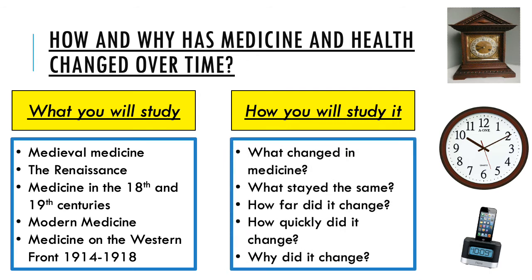In terms of how you will go about studying it, this is largely about what has changed and what has stayed the same in medicine and health across this large period of time. When assessing change we want to ask: why did things change? What brought about these changes? And then we need to look at the speed of change and the extent of change — when did things change quickly or slowly, and when did things change a lot or only a little? Those are the parameters we'll use to understand the topic.